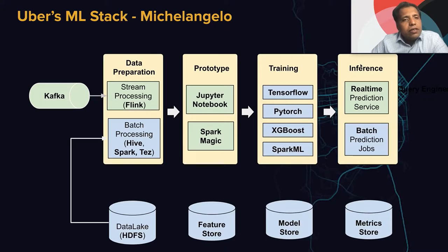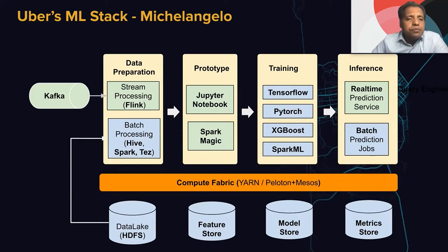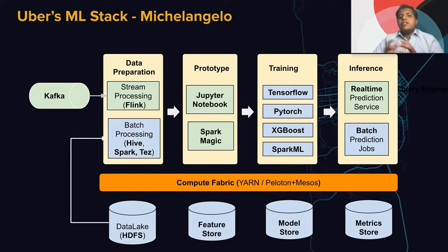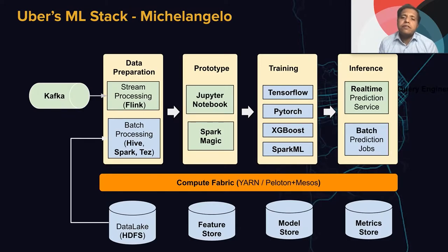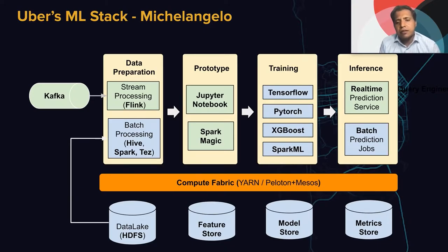Let's talk about Uber's ML stack, which is Michelangelo. We ingest all the data from Kafka, then do data preparation through stream processing with Flink and batch processing from Hive. All this data is powered by the data lake, HDFS, for batch processing, and for stream processing we get data directly from Kafka. We do prototyping with Jupyter Notebook and SparkMagic, training through TensorFlow, PyTorch, XGBoost, and Spark, and for inference we have the real-time prediction service and batch prediction. Pretty much all this processing happens on the ComputeFabric powered by YARN and in some cases Peloton on Mesos.